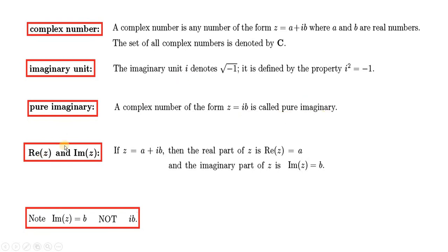If z = a + ib, then the real part of z is Re(z) = a, and the imaginary part of z is Im(z) = b — not ib. اسی a کو ہم real part of z کہتے ہیں اور اسی b کو imaginary part of z کہتے ہیں۔